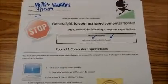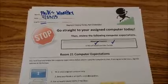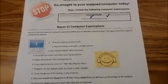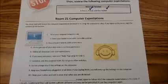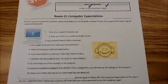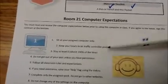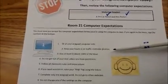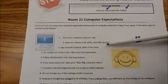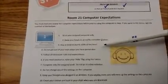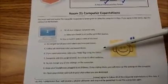Let's first start by going over our computer expectations since it has been a while since we've done our video. You must read and review the computer expectations below prior to using the computer in class. If you agree to the terms, sign the contract at the bottom. First, sit at your assigned computer only. Keep your heads in air traffic controller position — that means you are sitting up looking at your computer screen. Stay at level zero, which is silent 100% of the time. You should not need to whisper to a partner or talk to me without raising your hand. Do not get out of your seat unless you have been given permission. Follow all classroom rules and expectations.